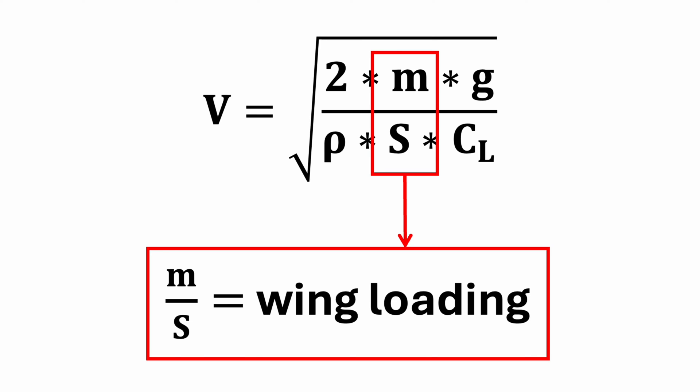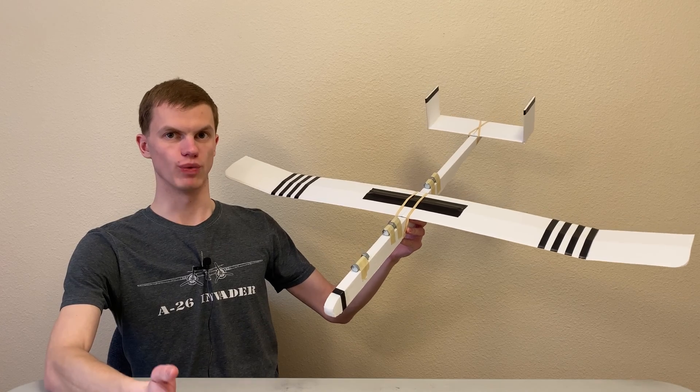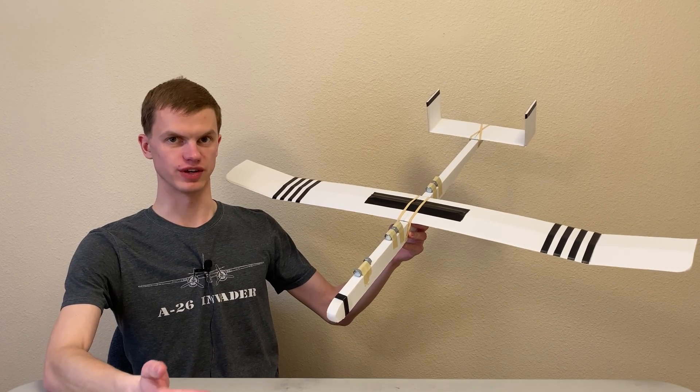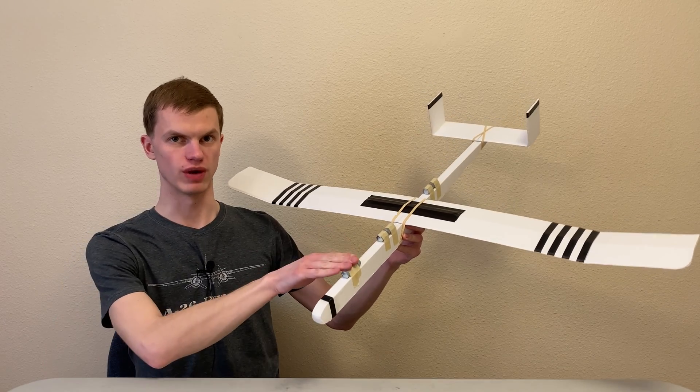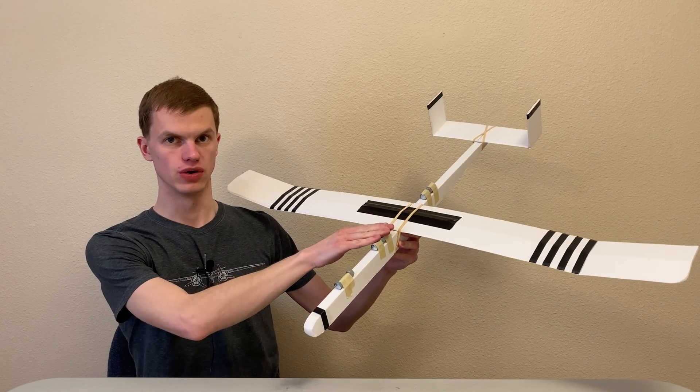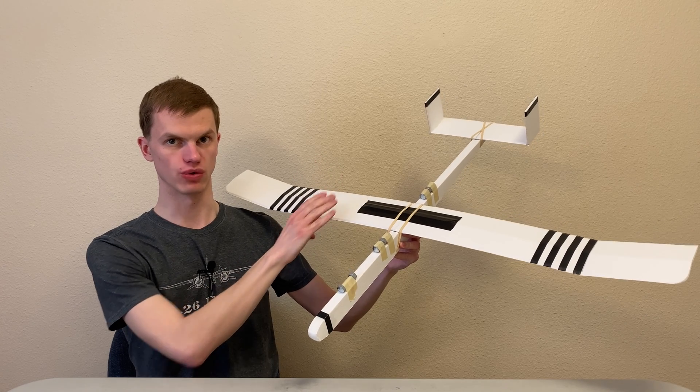Planes with higher wing loading fly faster, and planes with lower wing loading fly slower. You can experiment with different wing loadings and different speeds by adding or removing weight from your plane, or by installing bigger or smaller wings.